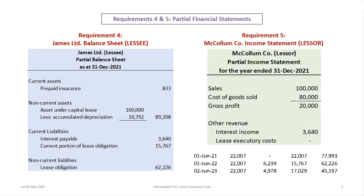Now for the lessor's income statement column. The lessor will show sales of $100,000 less cost of goods sold of $80,000, giving a gross profit of $20,000 — this is a sales type lease, so the company realizes profit from the product itself. In other revenue, we'll have interest income of $3,640. The executory costs show as zero because the $2,000 credit to the executory cost expense is offset by the debit, so the two cancel each other out.